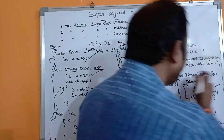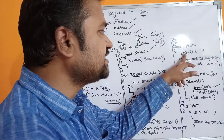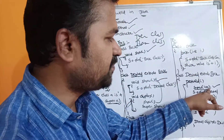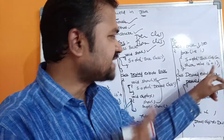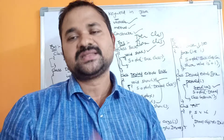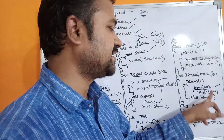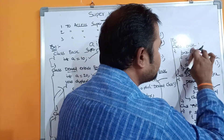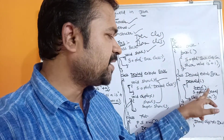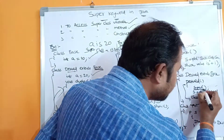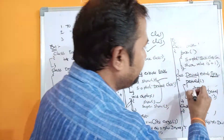Control goes to the super class constructor in the base class. The value 100 is passed to i, and the body executes: System.out.println("super class constructor value is " + i), printing 100. After that, control returns to the next statement in the derived constructor: System.out.println("derived class constructor"). If it is a default constructor with no arguments, we use super() - super with empty parentheses followed by semicolon - and the base class default constructor will be called.